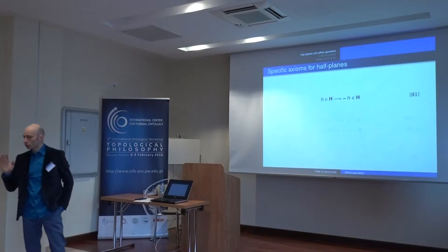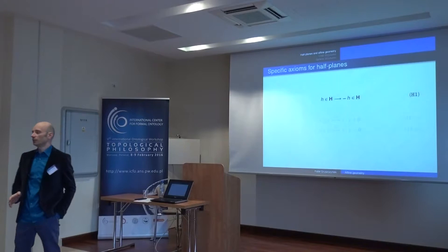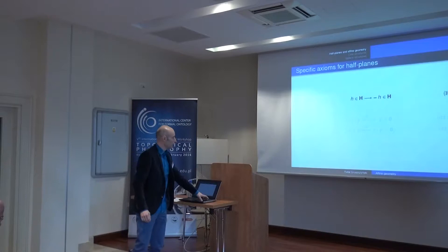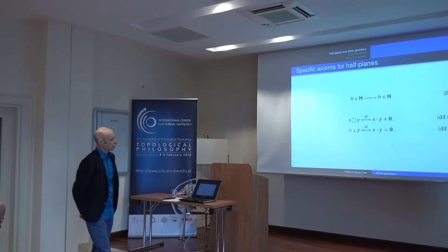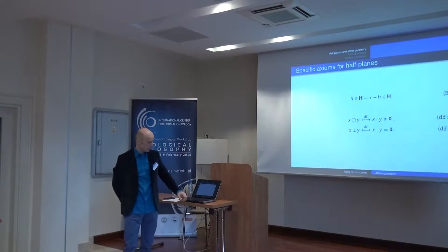The first axiom, pretty obvious, is that if something is a half-plane, then its Boolean complement must be a half-plane too. I will also use two auxiliary notions: Boolean overlapping — two regions overlap if and only if their product is non-zero — and incompatibility, defined as having no non-zero common part.